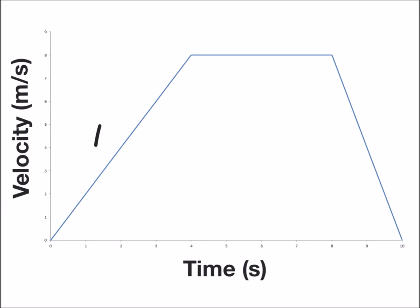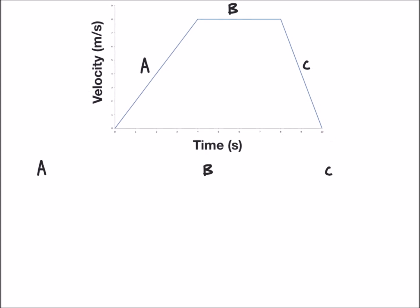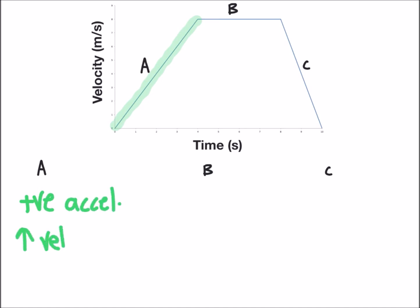We're going to begin by looking at the three segments of the graph labeled A, B, and C. Let's start with segment A, which is highlighted in green. Time for that segment increases from zero to four seconds and velocity increases from zero to eight meters per second. So what we can say is there's a positive acceleration as well as an increase in velocity.